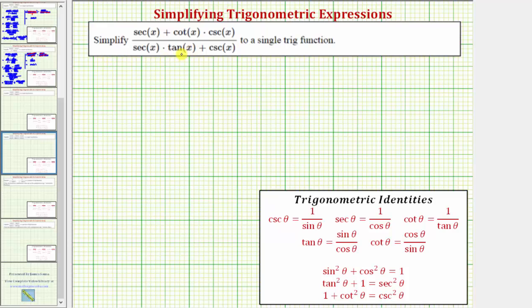We're asked to simplify the given trig expression to a single trig function. Looking at the expression, there are no obvious trig substitutions, and therefore let's convert all the trig functions to sines and cosines.